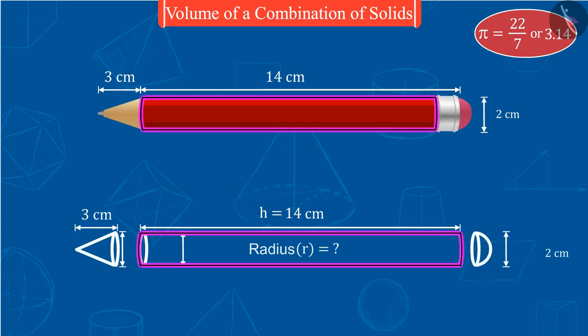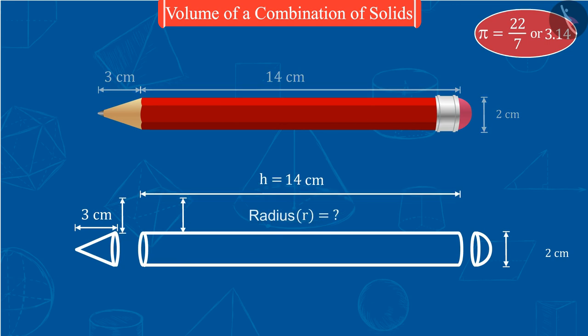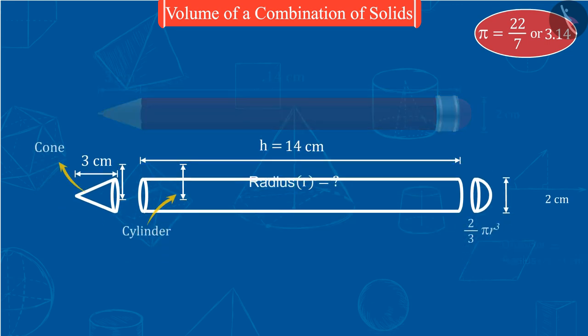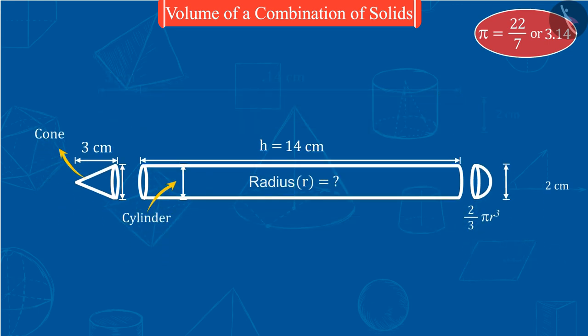That is, the radius of cylinder, cone, and hemisphere will be equal. And hence, the radius of all of these will be 1 cm.